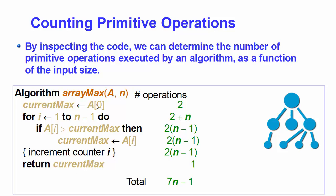Let's go line by line through the array-max algorithm and count basic operations. In the first line, we assign the value of the array at index zero to the 'current maximum' variable — that's one operation — and we also index the zeroth element of the array — that's a second operation. So the first line performs two basic operations. For the for loop initialization, we assign the value of i and compare n with i, which are two basic operations.